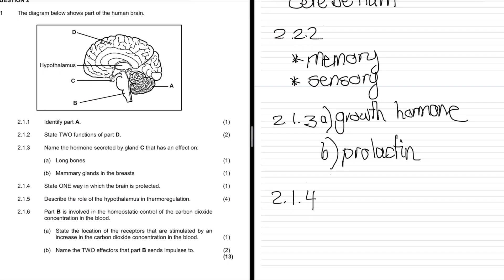2.1.4 - state one way in which the brain is protected. If you hit your brain, how is it protected? The biggest one is bone, the cranium. If you can't remember cranium, think of the fluid - the bone sits in a fluid jelly-like environment created by the meninges. The outermost part is definitely the cranium.